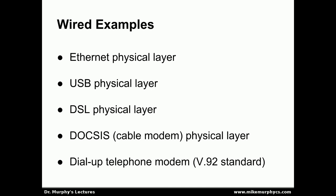Let's look at a few examples of different types of physical layers. In the case of wired networks, we have the Ethernet physical layer for standard Ethernet connections. The Universal Serial Bus, or USB, also has a physical layer specification — including what a USB connector looks like and how it's designed — so all USB devices can interoperate using the same connector and electrical specification. Digital subscriber line (DSL) has a physical layer, cable modems have a physical layer as part of the DOCSIS standard, and even dial-up telephone modems had a physical layer as part of the V.92 standard.